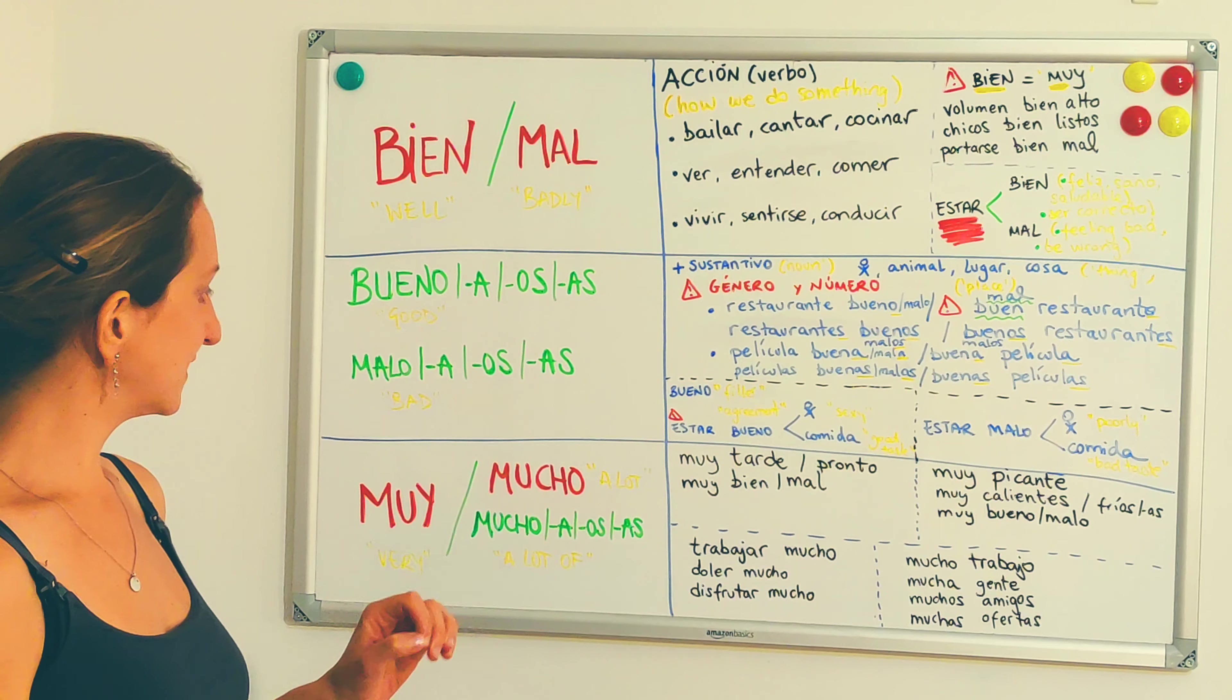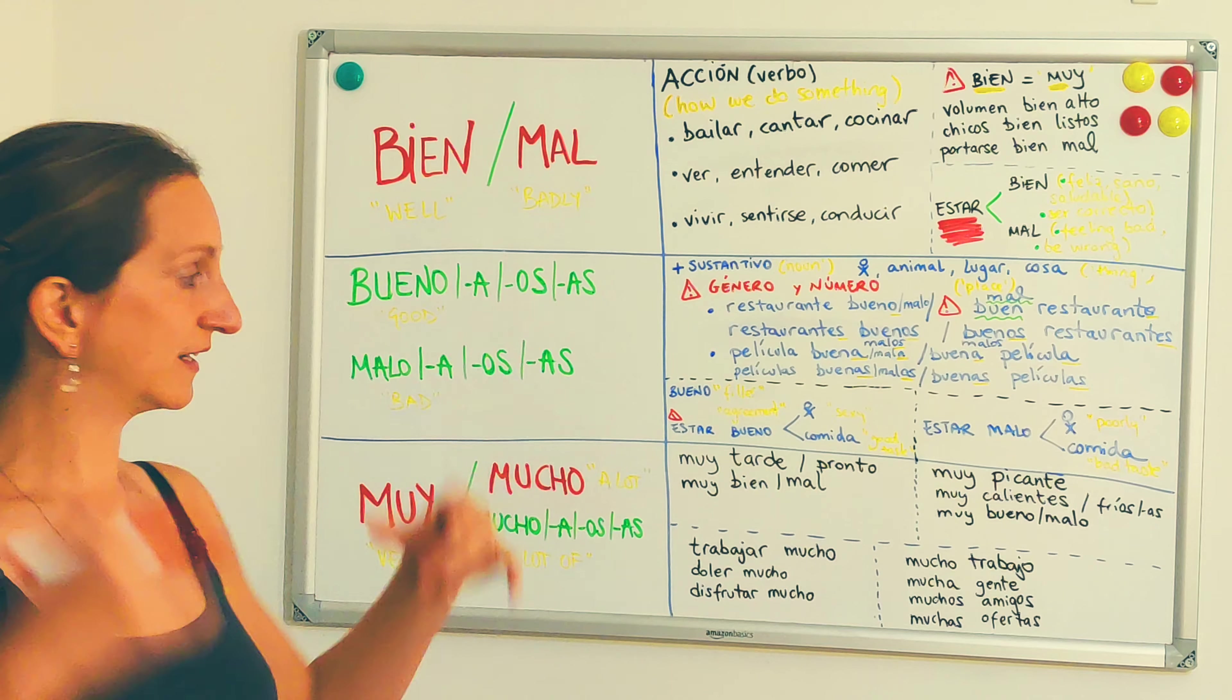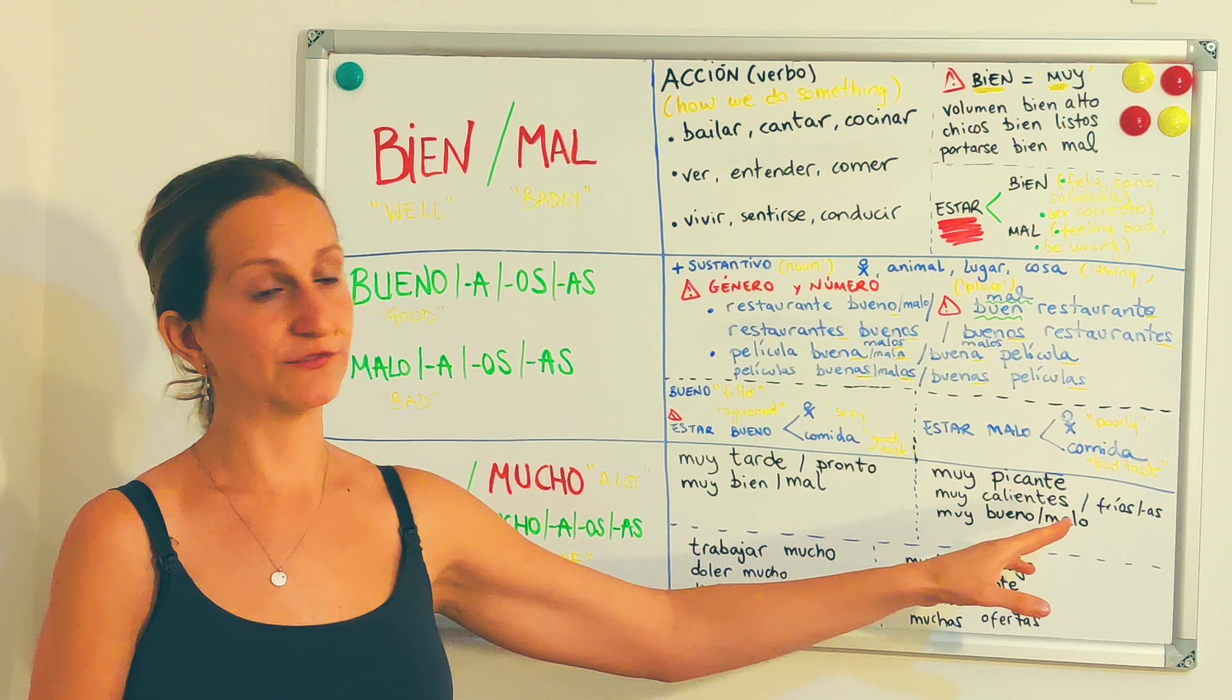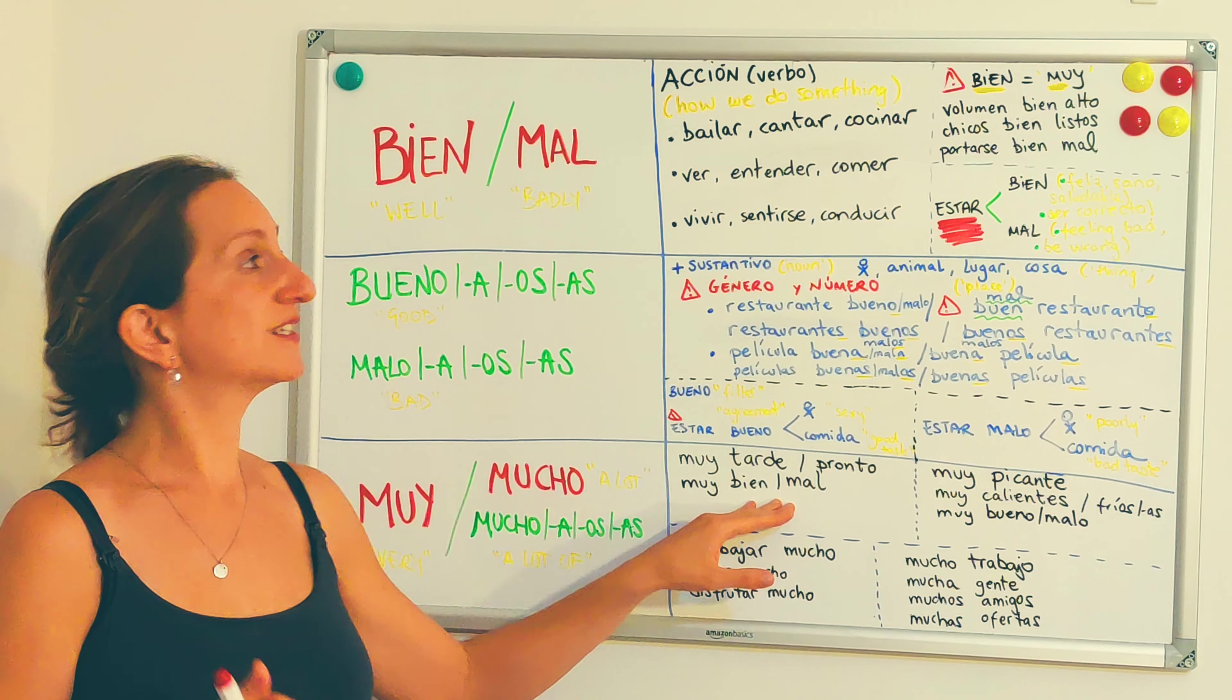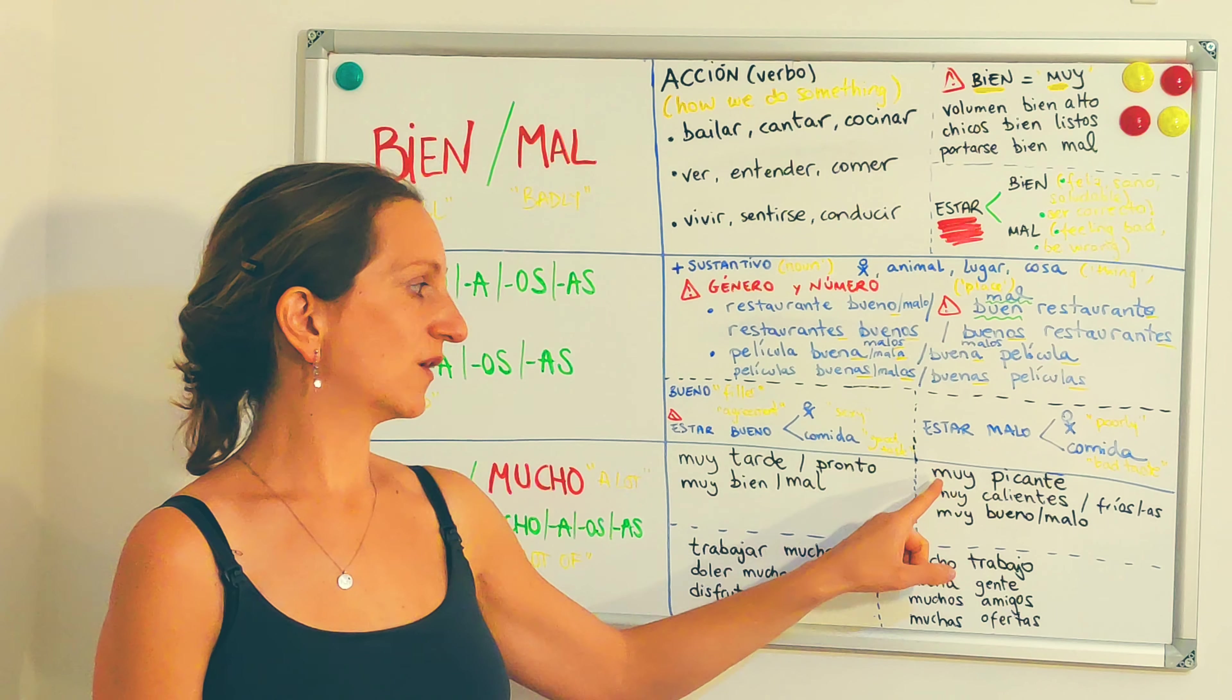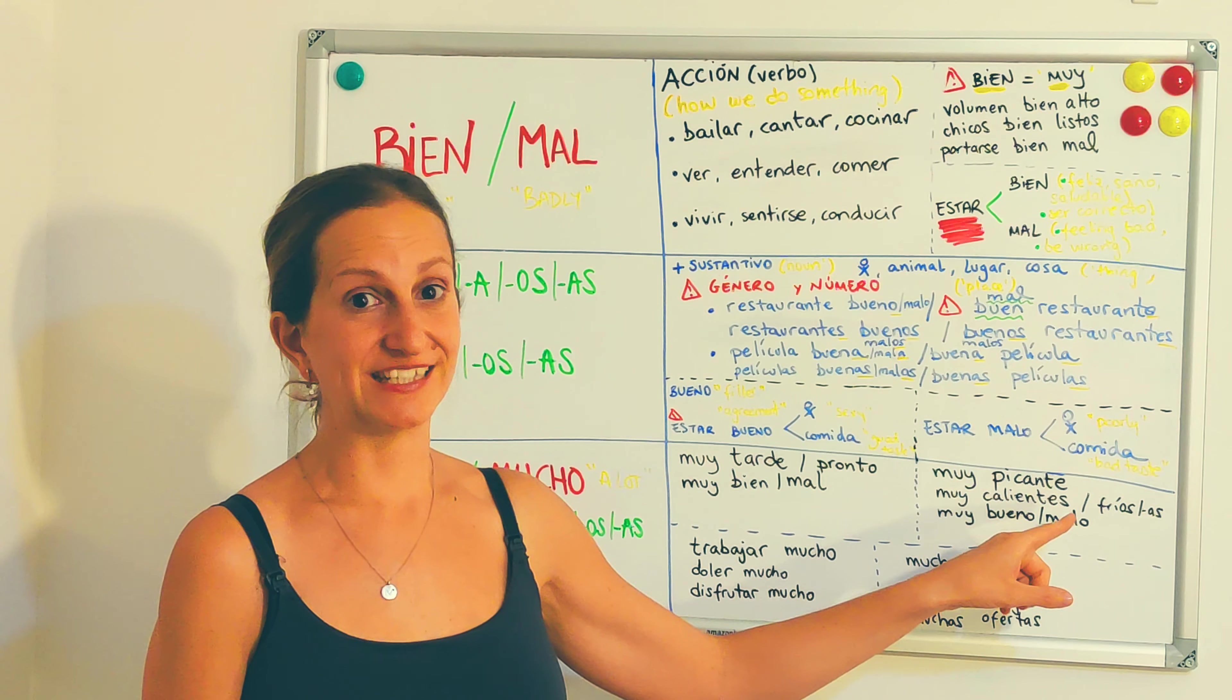And at last but not least, we've got muy mucho. Muy is an adverb as well, and it means very. It intensifies something. So it can intensify another adverb or an adjective. Por ejemplo, muy tarde, muy pronto, algo está muy bien o está muy mal, those are adverbs, remember?